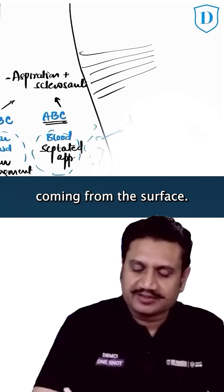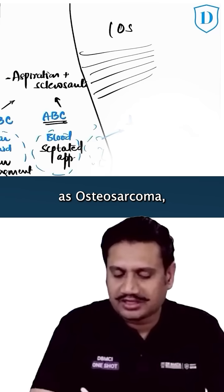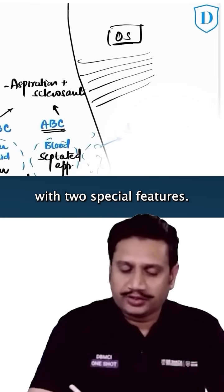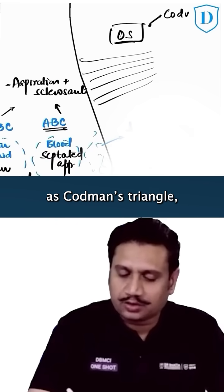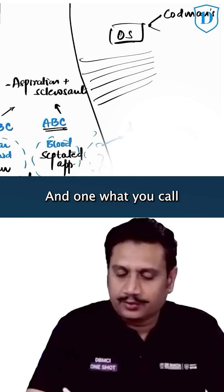Osteosarcoma comes to you with two special features: one you call Codman's triangle, and one what you call the sunburst appearance.